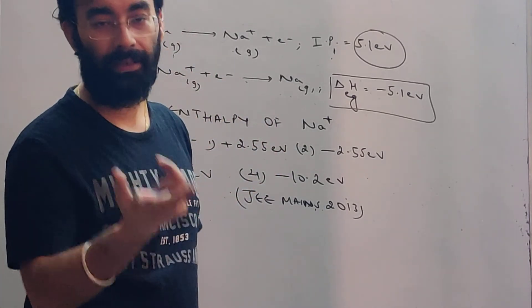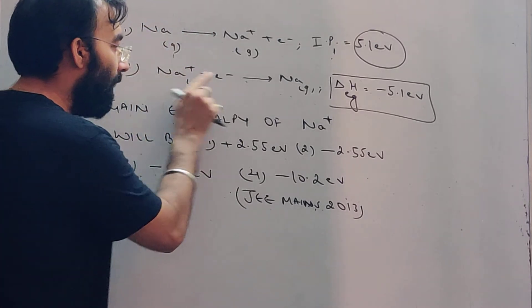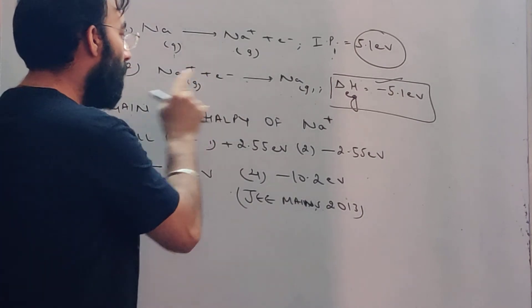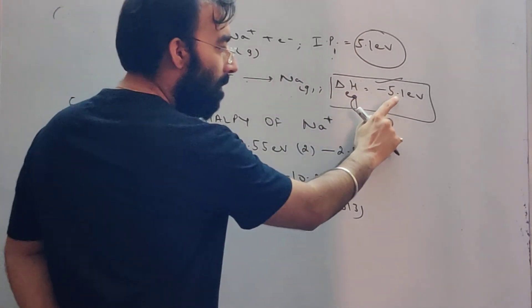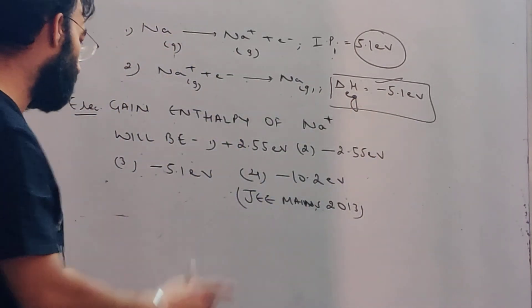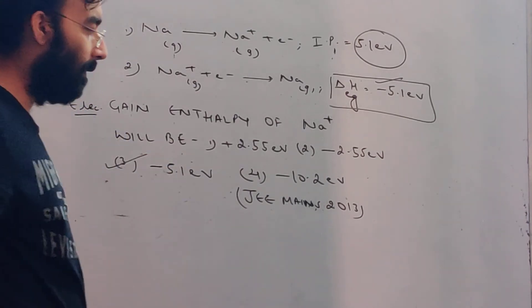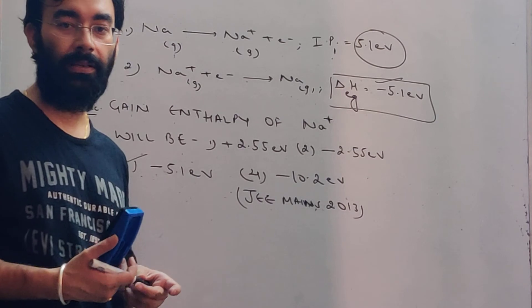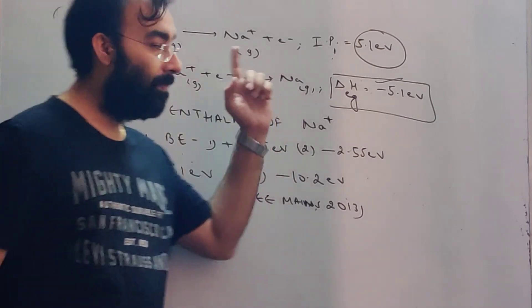When the reaction is reversed, the electron gain enthalpy of sodium ion will be minus 5.1 electron volts, which is given as option three. So this question, the answer will be option three. It's an easy question.